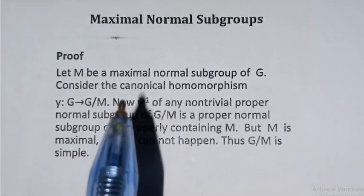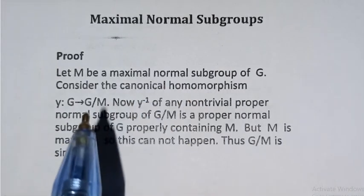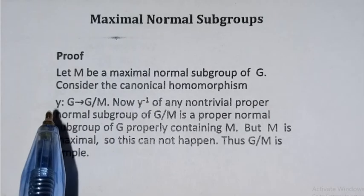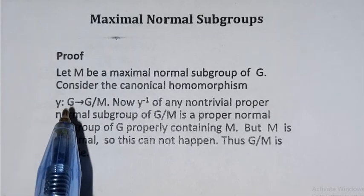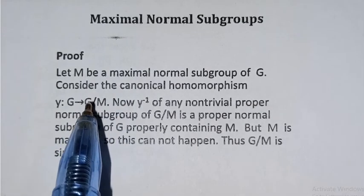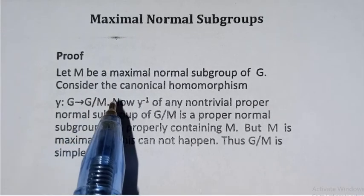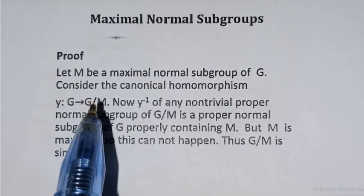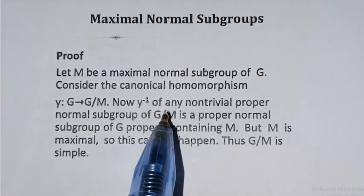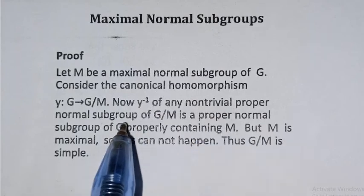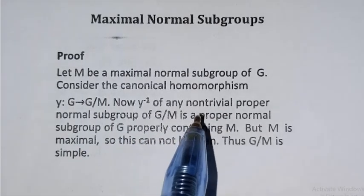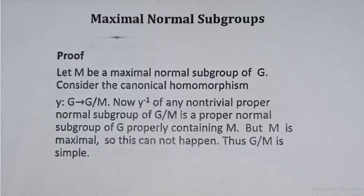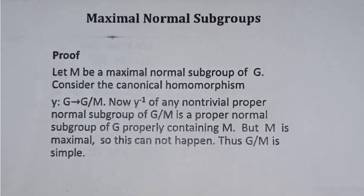The key argument is: if there is any non-trivial proper normal subgroup of G over M, then its pre-image under the inverse mapping Y-inverse is a proper normal subgroup of G that properly contains M. Here we have a contradiction.